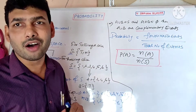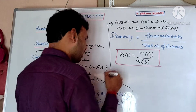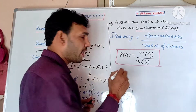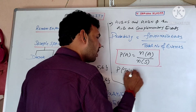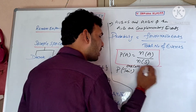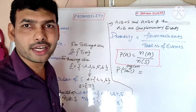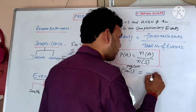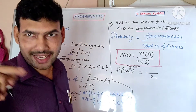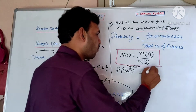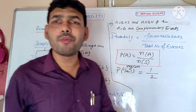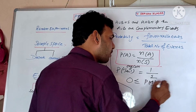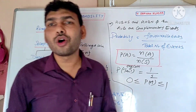For example, the probability of getting a tail when tossing one coin: the total outcomes are {H, T}, so the total is 2. The favorable outcome — tail — is just 1. Therefore, the probability of getting a tail is 1/2. The probability of any event always lies between 0 and 1.